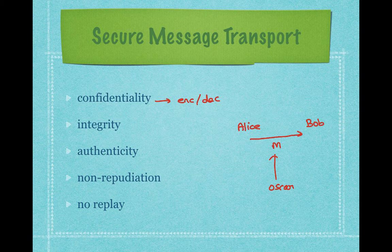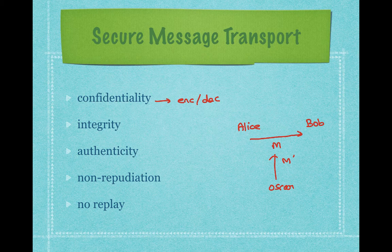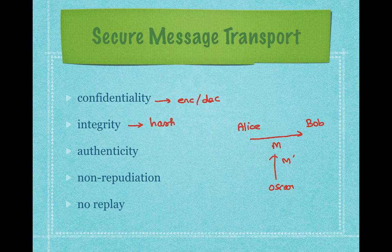The second property that we need is that the outsider should not be able to tamper the message. To prevent that, we need to use some mechanism to check the integrity of the message. Avoiding or detecting the tampering of the message is provided by the integrity checking function. Typically we use something called a hash function to check the integrity of the message.